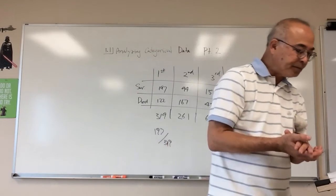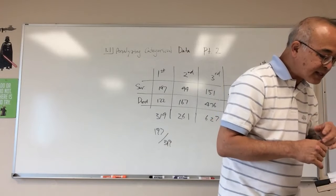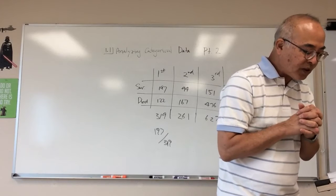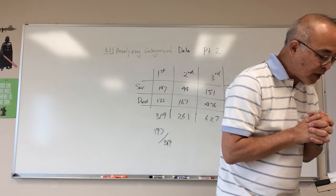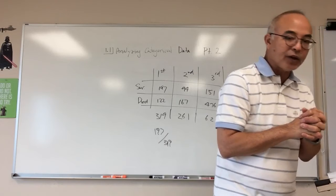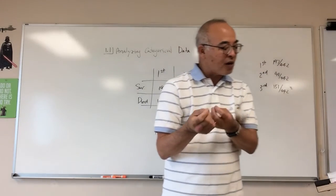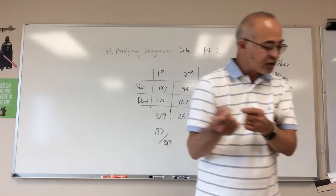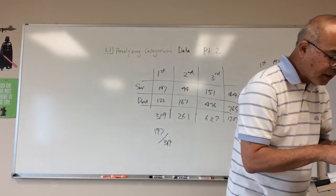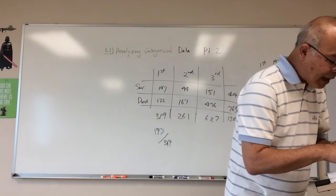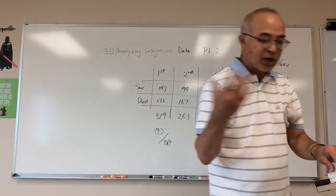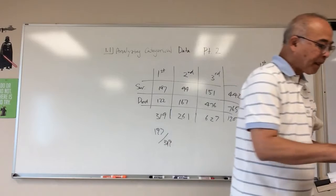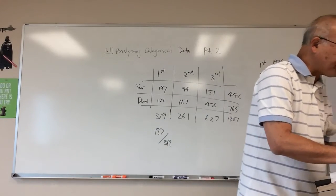There is an association between two variables if knowing the value of one variable helps us predict the value of the other. For example, knowing you're an environmental club member tells me you have a very small proportion of owning a snowmobile. If knowing one variable does not help predict the other, there is no association, and the segmented bar graphs would look pretty similar.